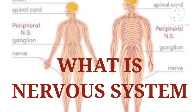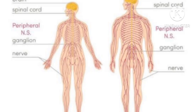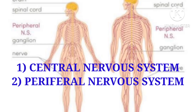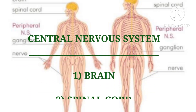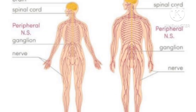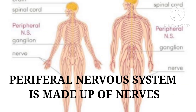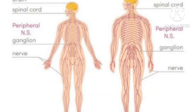First, let's discuss what the nervous system is. The nervous system has two main parts: the central nervous system and the peripheral nervous system. The central nervous system is made up of the brain and spinal cord. The peripheral nervous system is made up of nerves that branch off from the spinal cord and extend to all parts of the body.